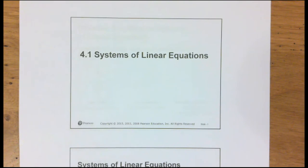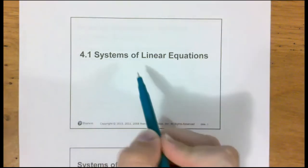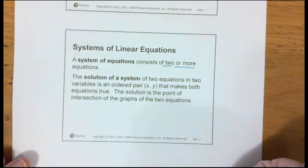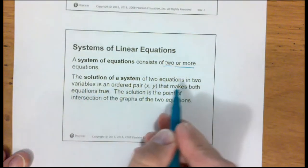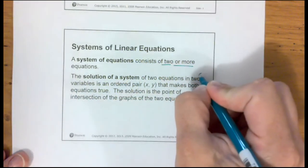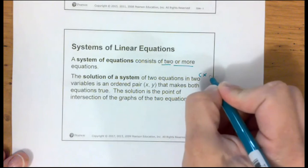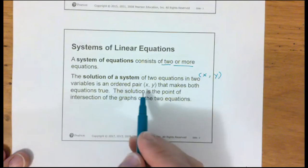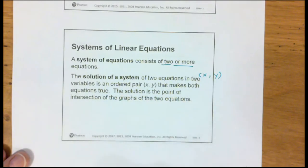What it is, is systems of linear equations. We've been graphing and solving linear equations, finding the solution for linear inequalities, and now we're doing systems of linear equations. A system just means there's more than one — two or more equations. The solution of a system of two equations in two variables — x and y — is an ordered pair (x, y) that makes both equations true. The solution is the point of intersection of the graphs of the two equations.